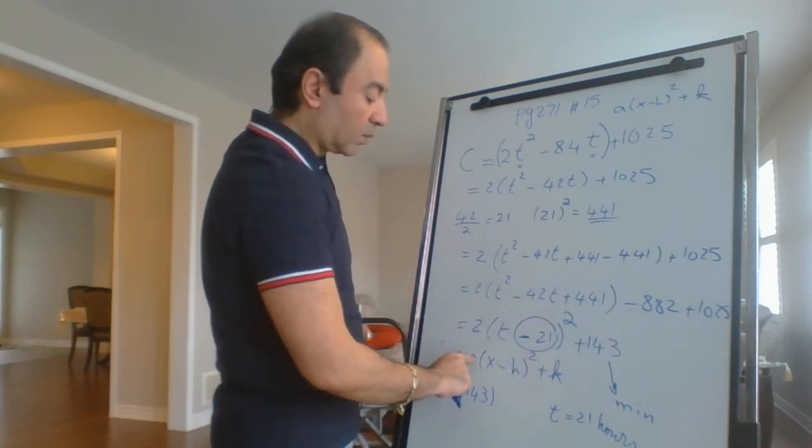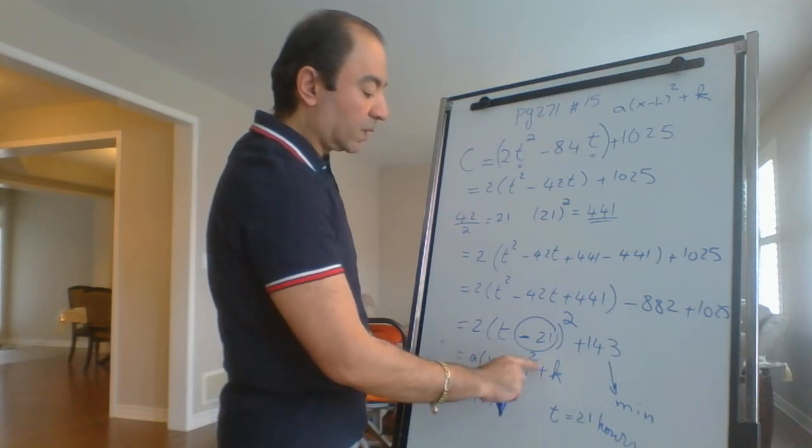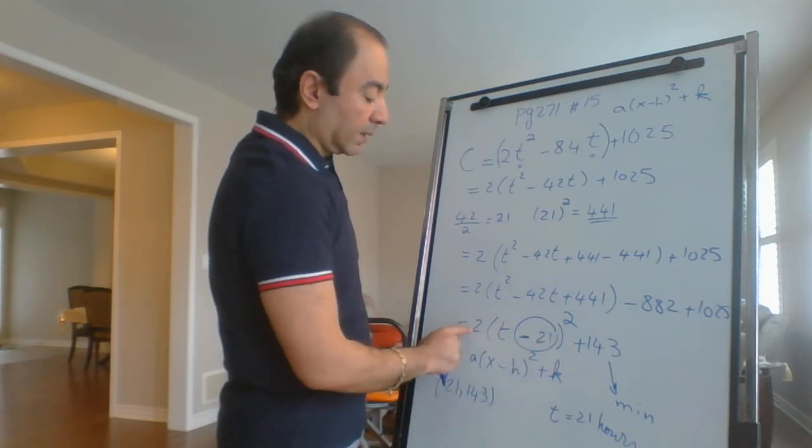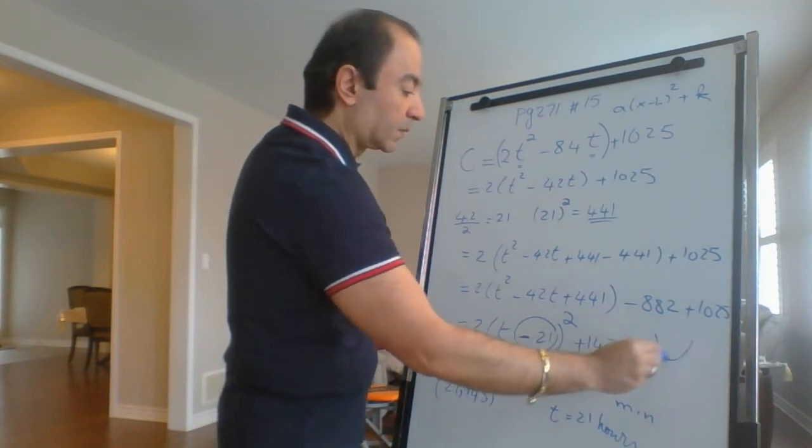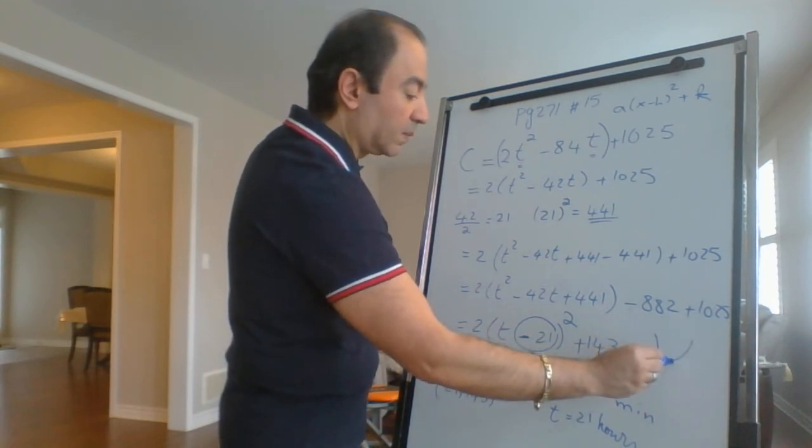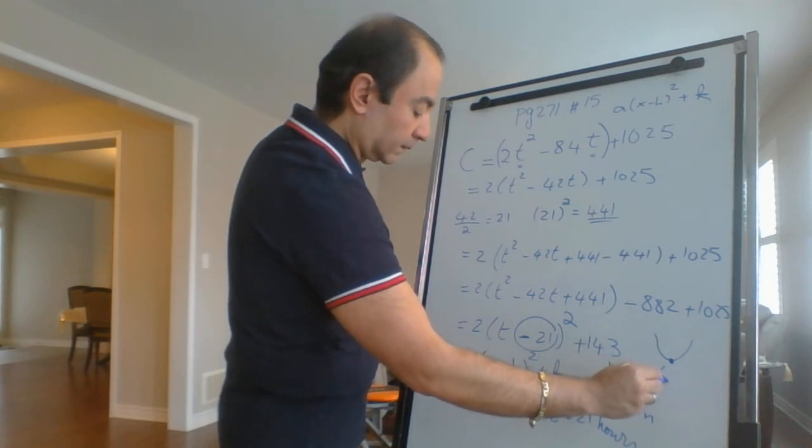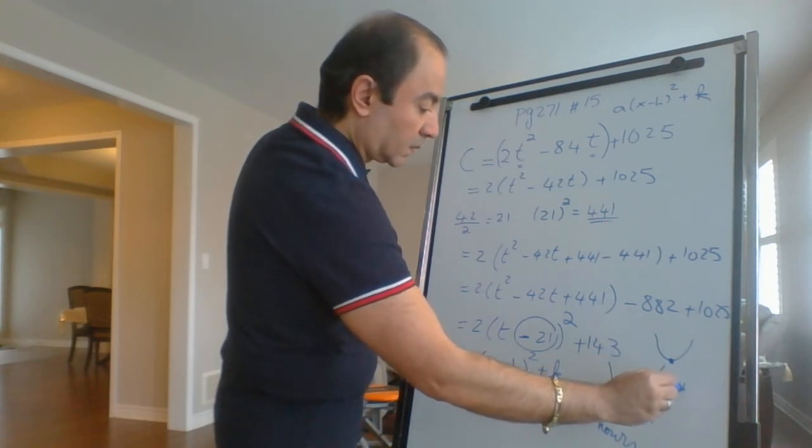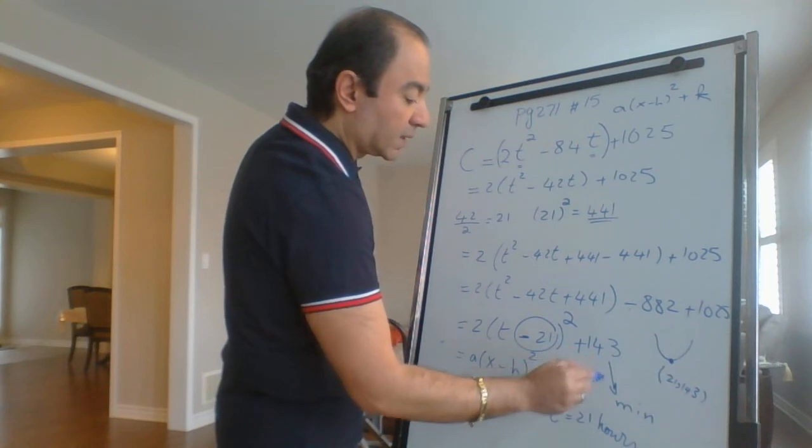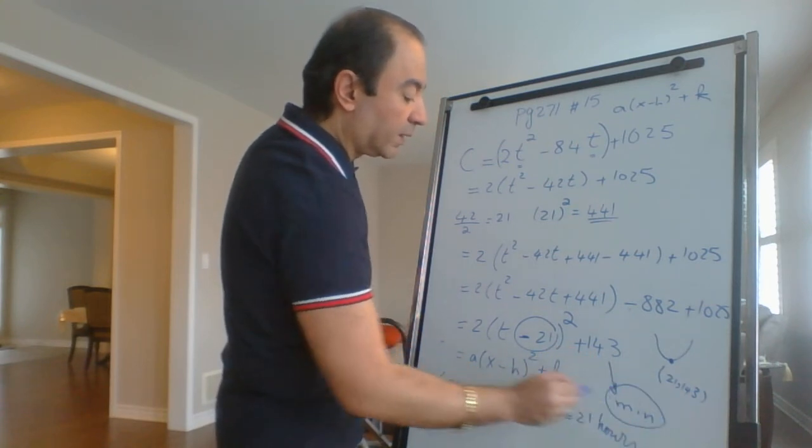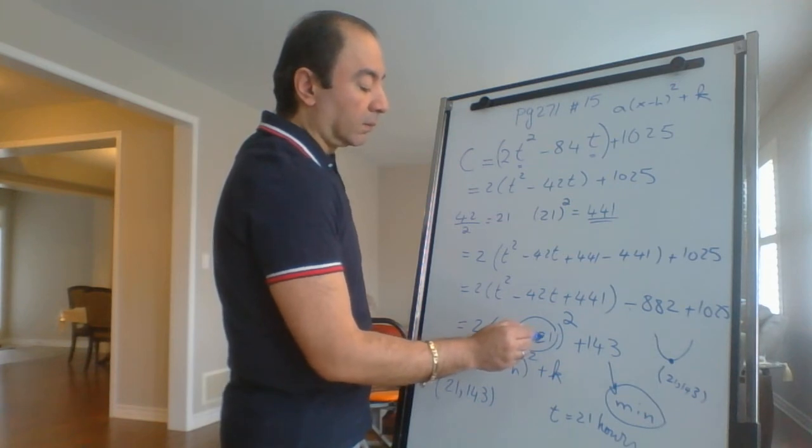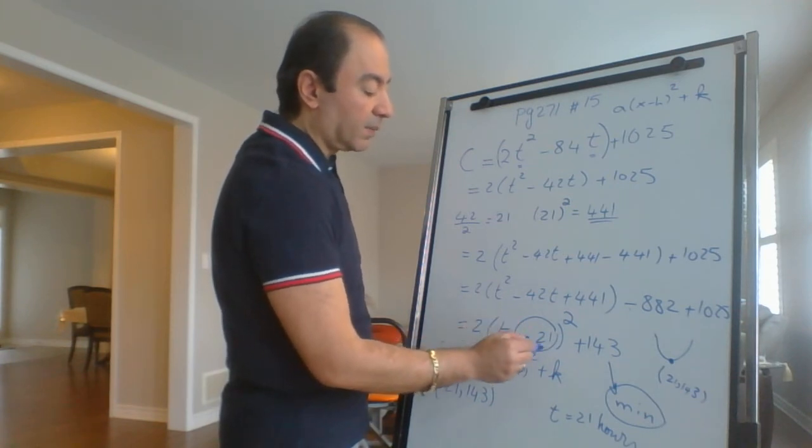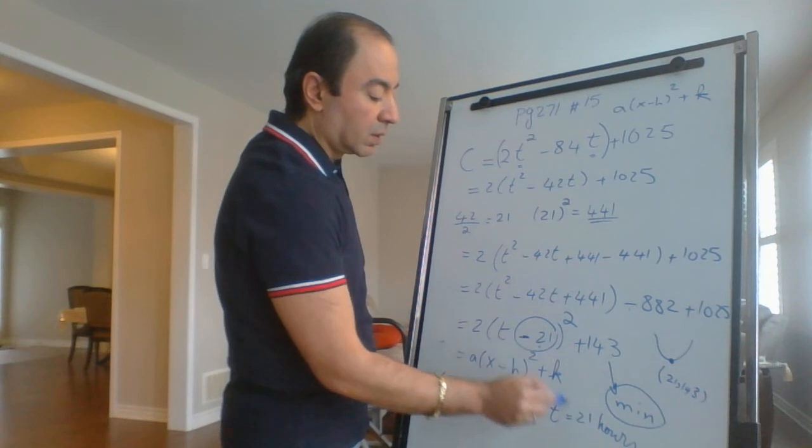This is in the form of a(x - h)² + k. A is positive, so the parabola will open up, so the vertex will be a minimum. Y of the vertex, which is k, represents the minimum value, and when it happens—x or T—is h, which is 21.